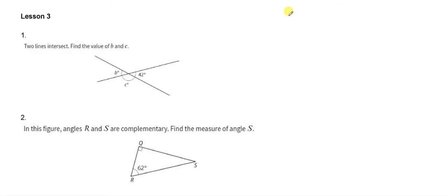All right guys, Catlin back here looking at lesson three from your homework set this week and we got two lines that are intersecting here and we define the value of B and C. So we're going to use a couple of the tools that we've learned this week.